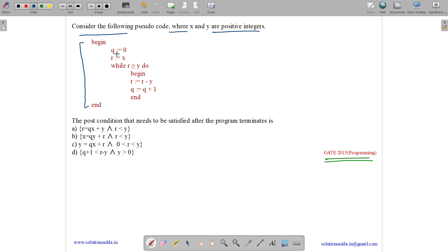consider the following pseudocode where x and y are positive integers. The code has begin and end with value of q assigned to 0, value of r assigned to x. Now we are running this condition while r is greater than or equal to y, and here we are decrementing the value of r by y and incrementing q by 1.